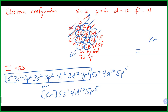If I just say give me the electron configuration, you can write it either way — the full version or the noble gas shorthand. But if I say do not use noble gas configuration, then you should write it the full long way.